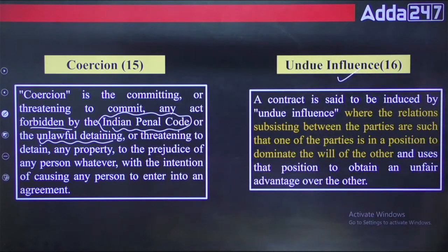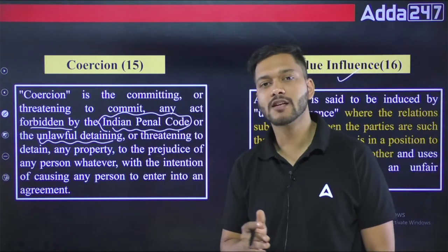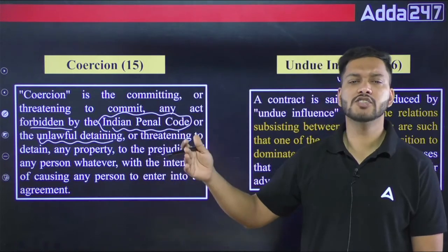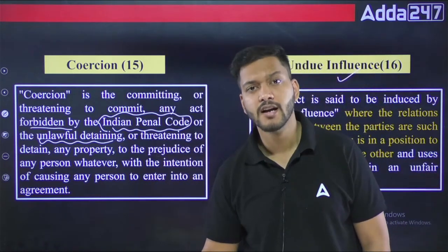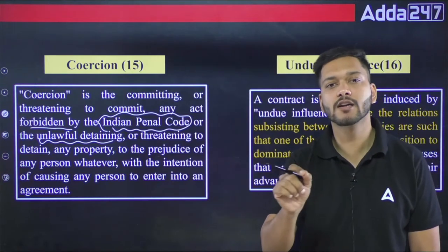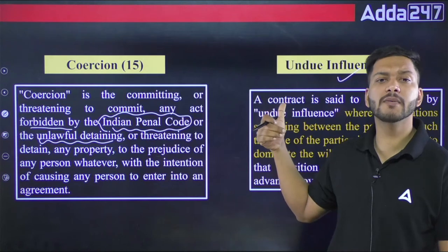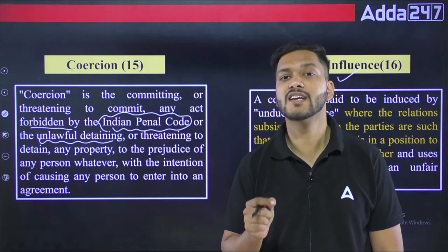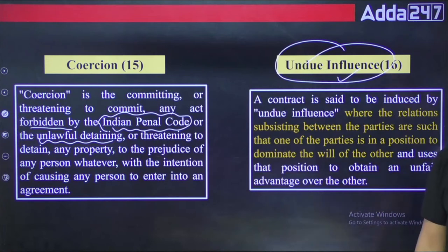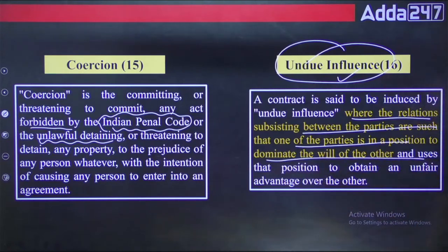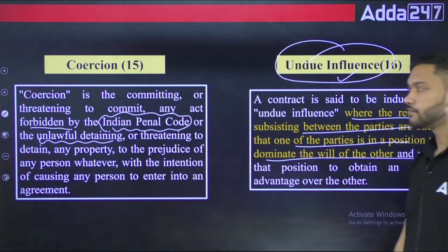The next element is undue influence, which concerns the relationship between two parties. For example, if I am in a dominant position over my house help — who owes me money — and I use that position to make them sell their 20 lakh property to me for only 5 lakh, that consent is obtained through undue influence. Undue influence is where one party is able to dominate the will of the other.